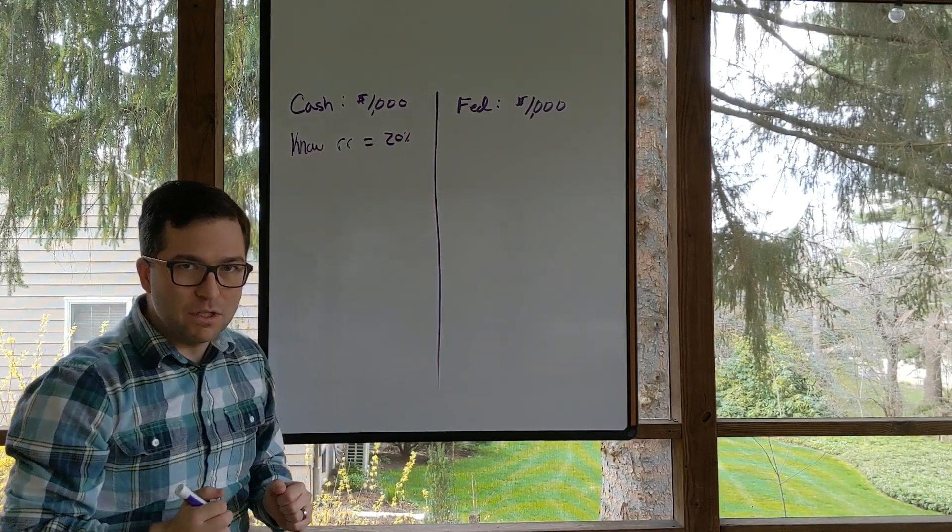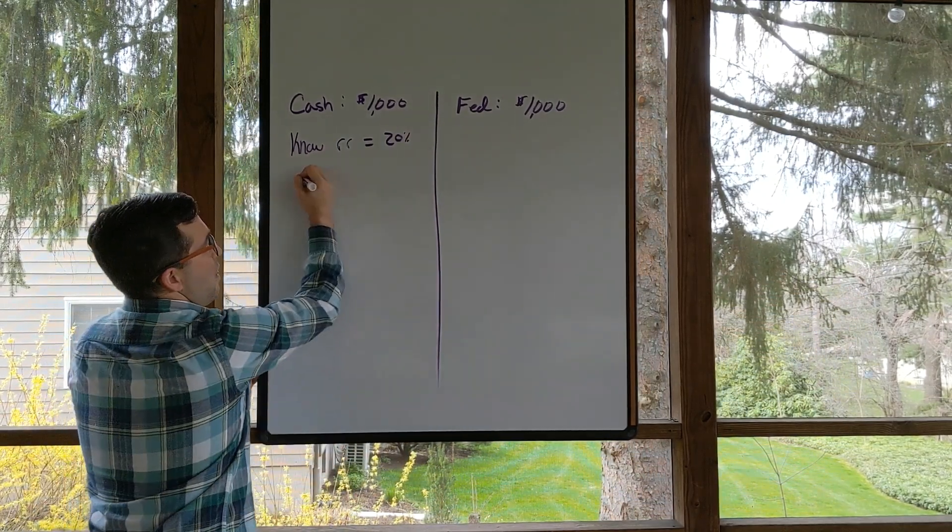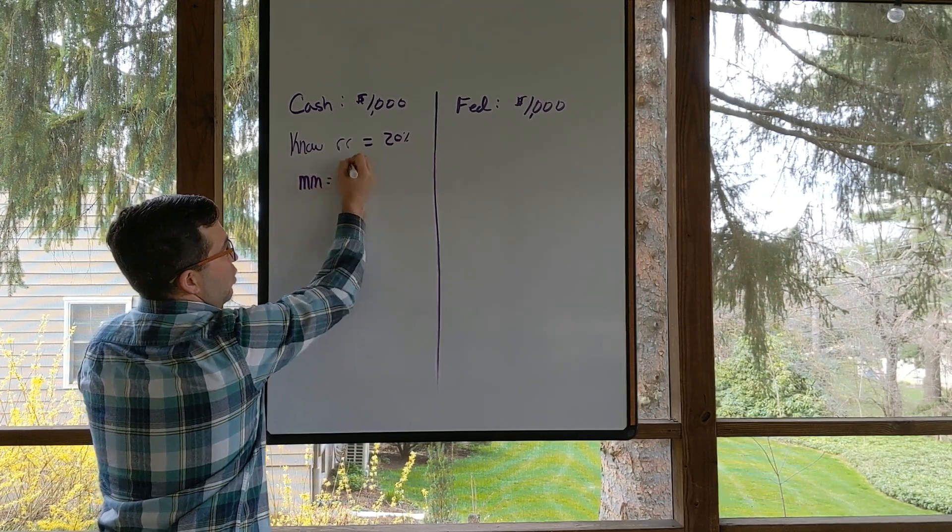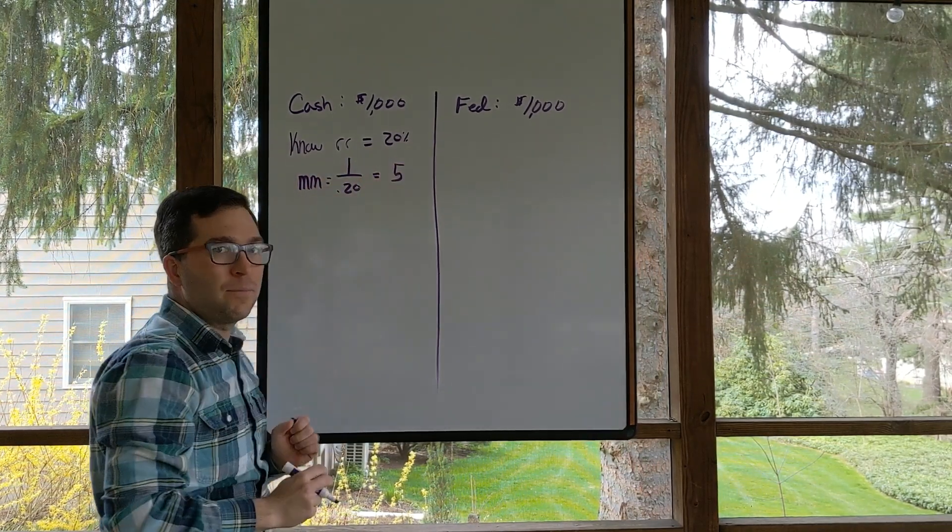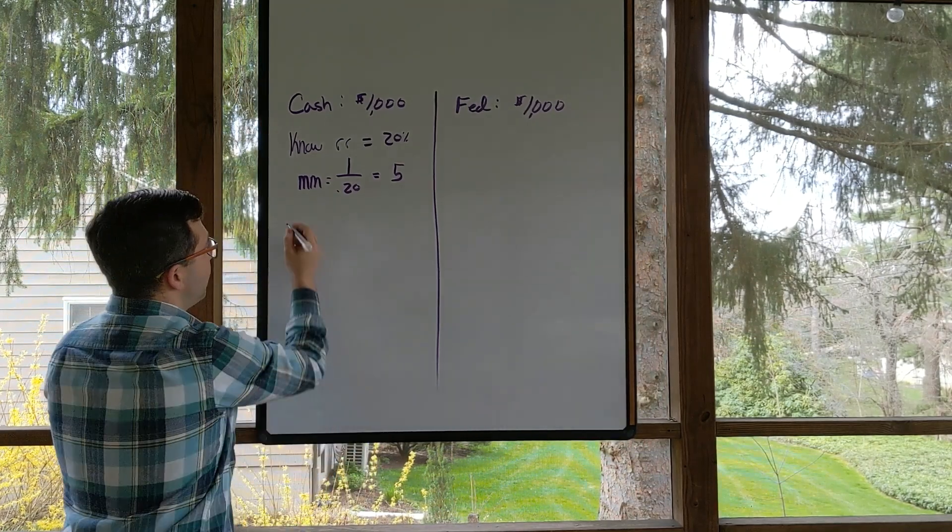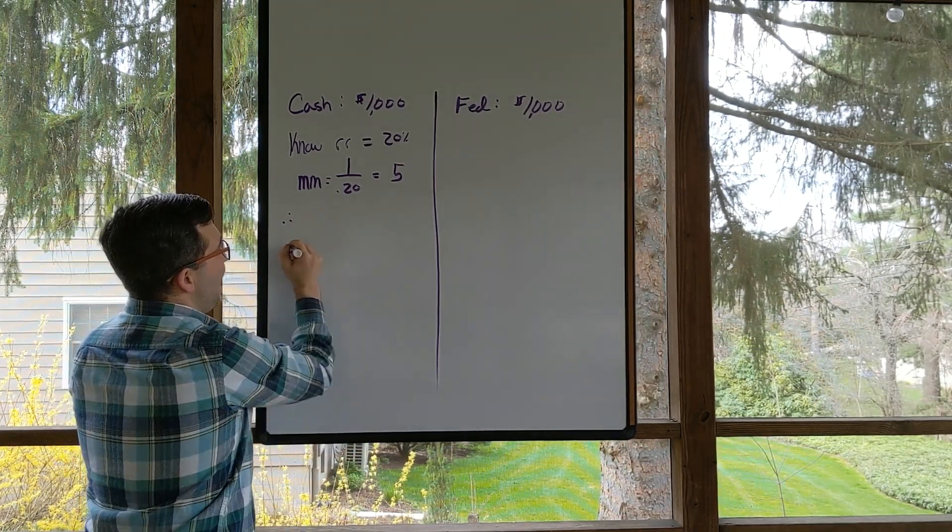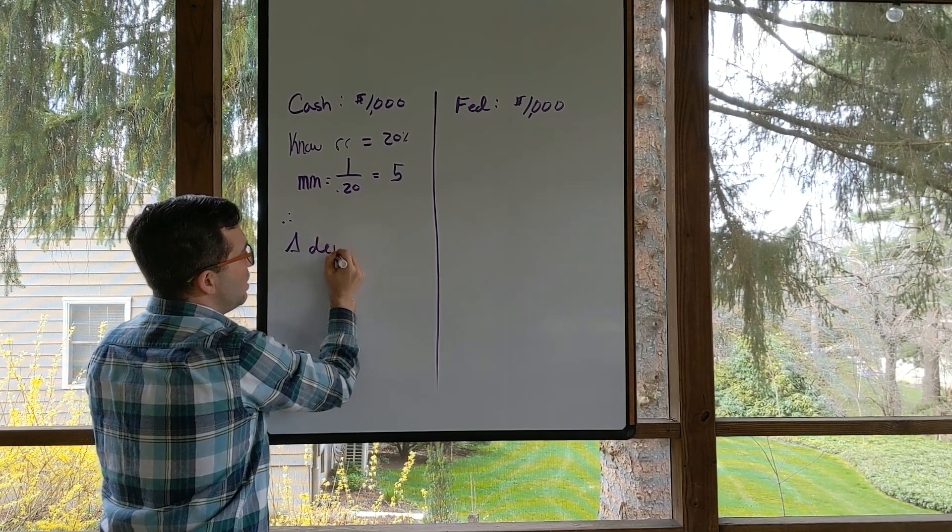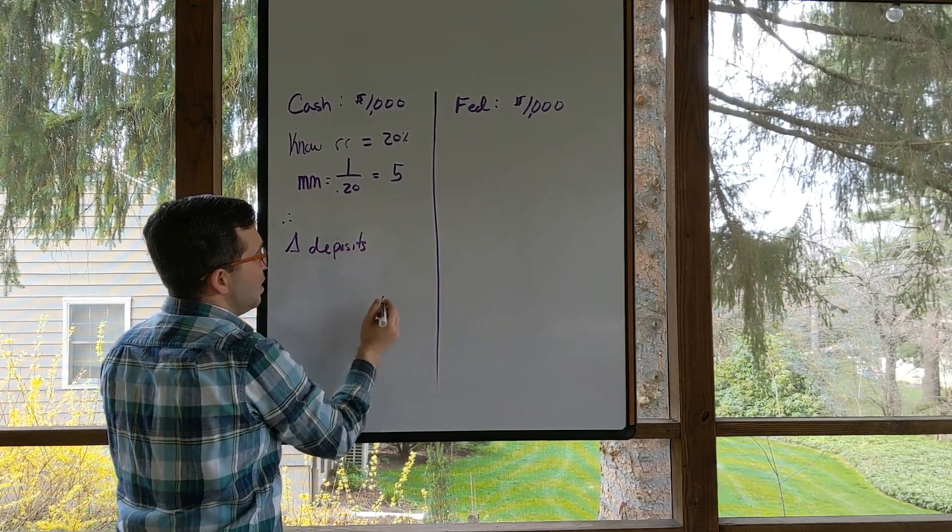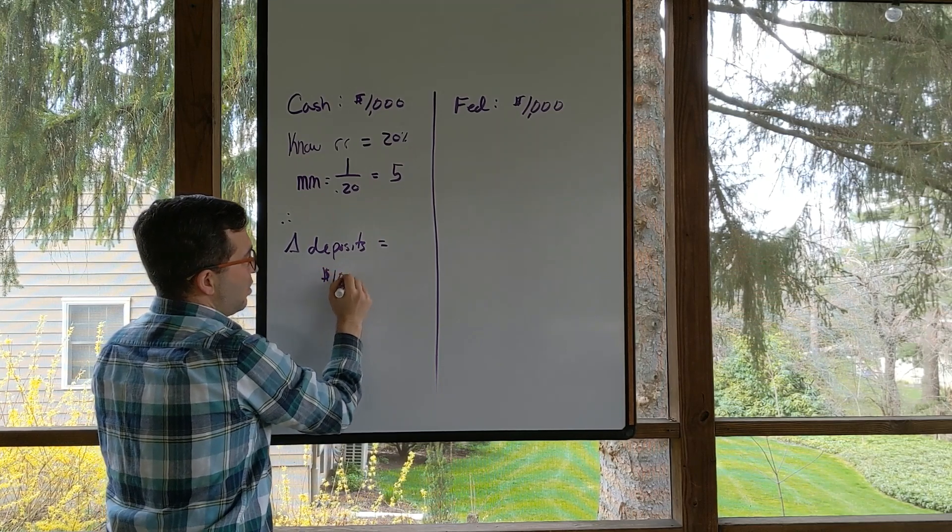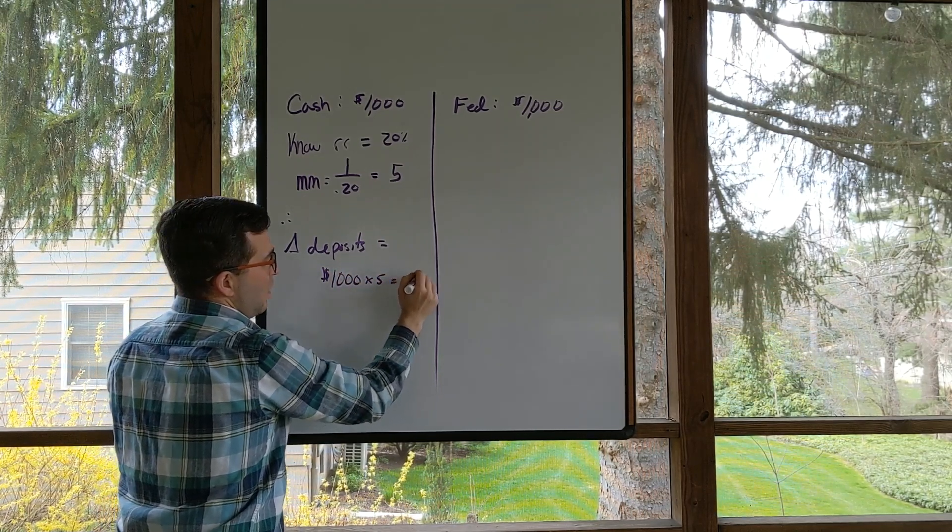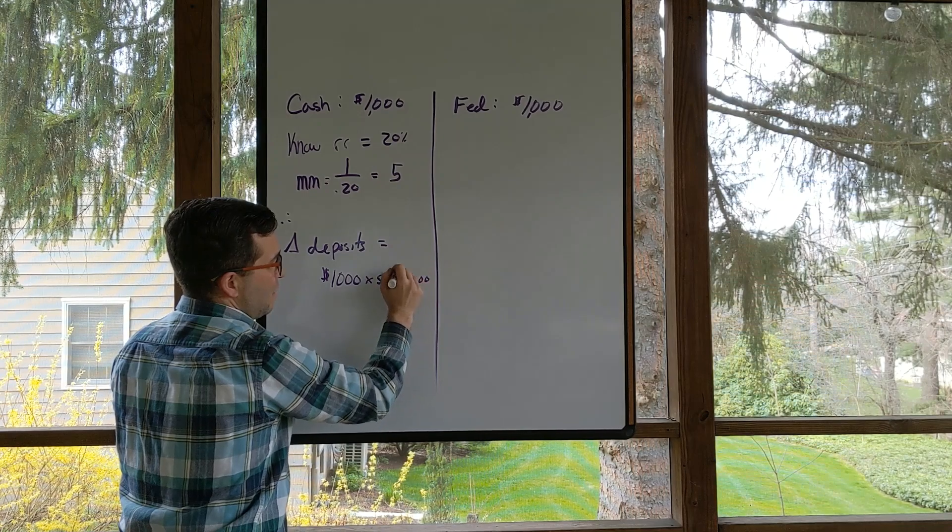We'll work on the cash side first. We also know then that the money multiplier is equal to 1 over 0.20 which is equal to 5, and therefore my change in total deposits is going to equal that $1,000 times 5 which is equal to $5,000.